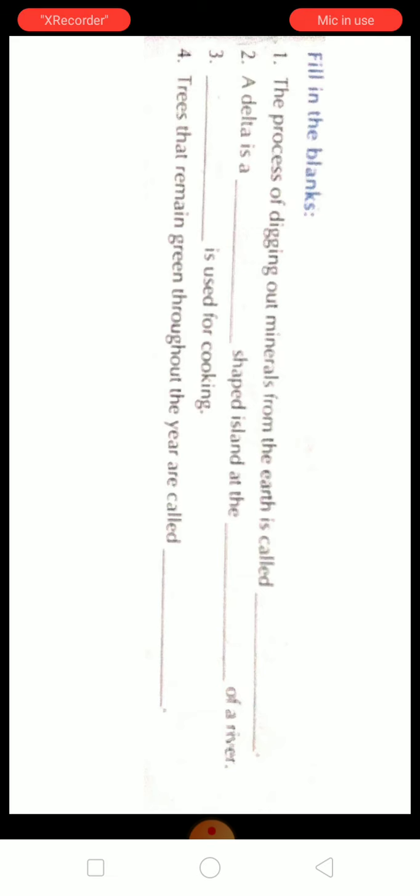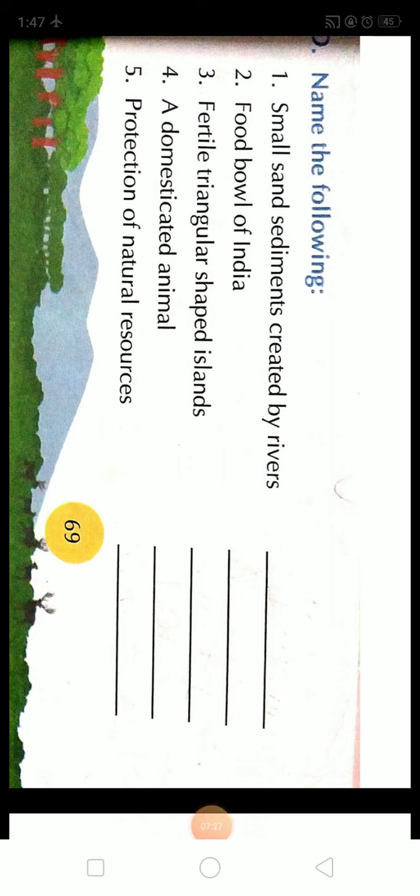Now the fourth is, trees that remain green throughout the year are called, they are called evergreen. The trees of the evergreen forest remain green throughout the year. But opposite to that, the trees of deciduous forest, they shed their skin in certain time. Fifth, small sand sediments created by rivers, they are called alluvial soil.